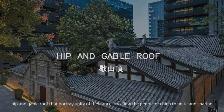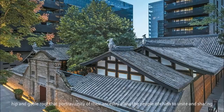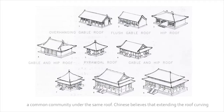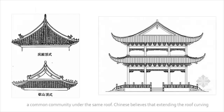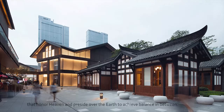The hip-and-gable roof portrays unity of the ancestry, allowing the people of China to unite and share a common community under the same roof. Chinese believe that extending the roof, curving and rising upwards at the ends, achieves harmony with mother nature and spirits that honor heaven and preside over the earth, achieving balance in between.